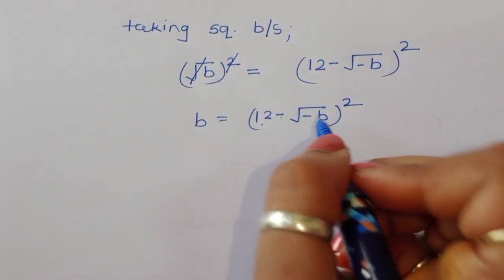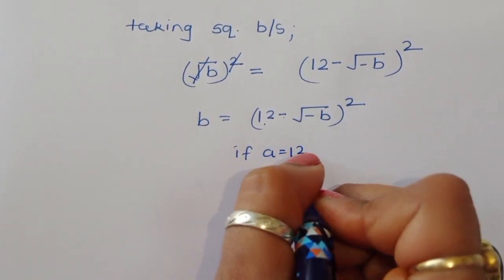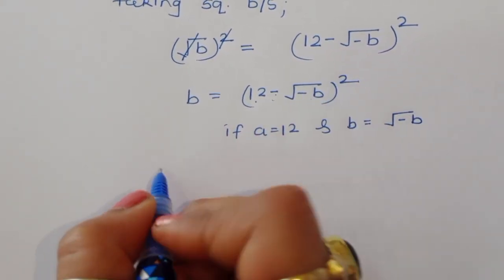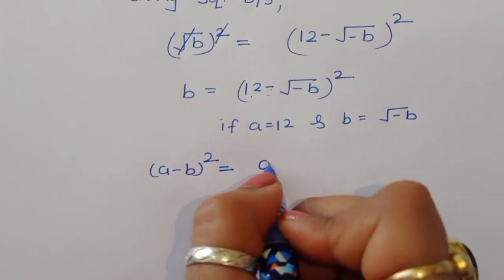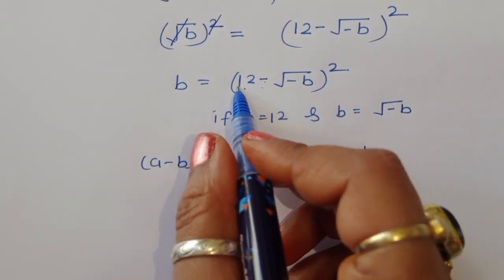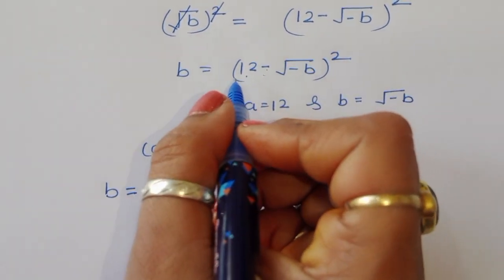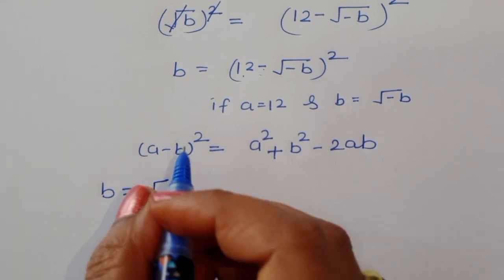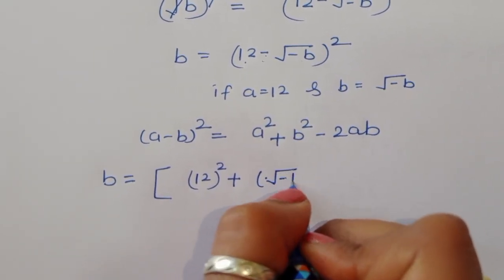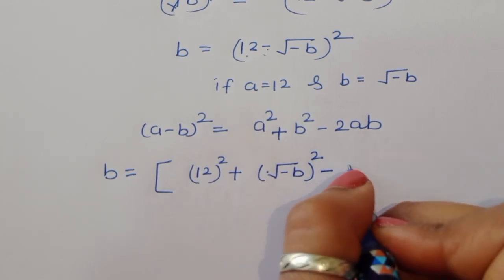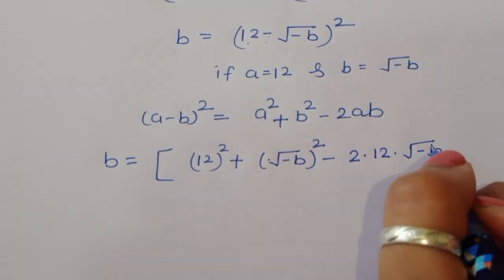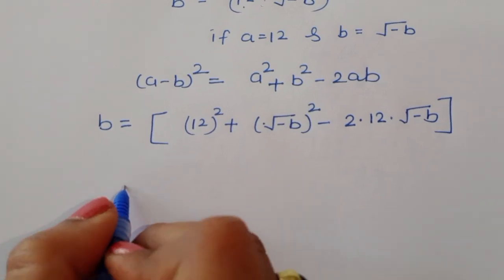This is in the form (a - b)², where a = 12 and b = √(-b). Using the formula (a - b)² = a² + b² - 2ab, we expand: b = 12² + (√(-b))² - 2 × 12 × √(-b).